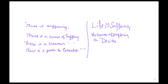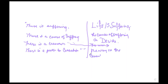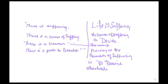Third: there is a cessation of suffering — they left that one the same most of the time. But for the fourth, the way to the cessation of suffering is to desire absolutely nothing.